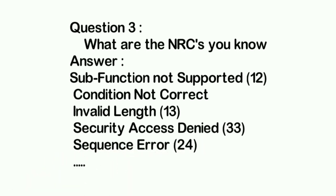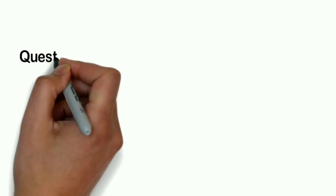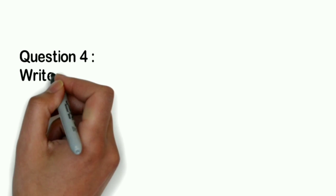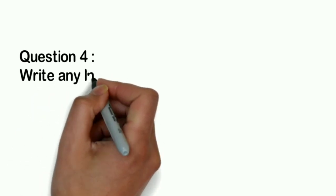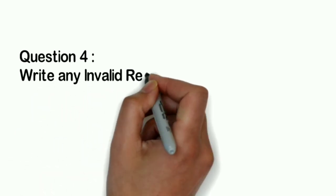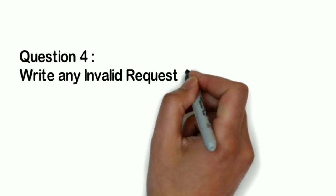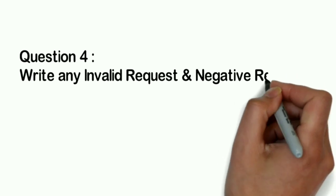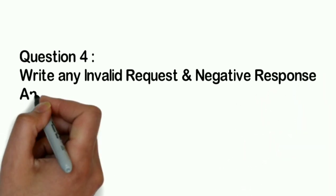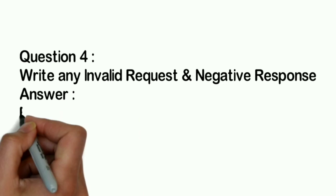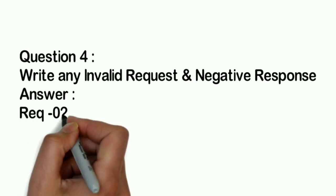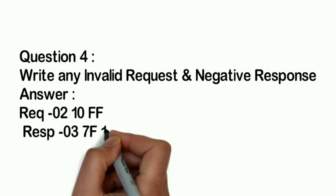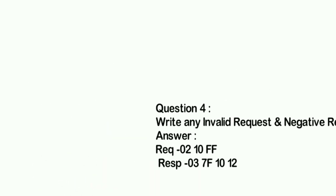Question four: Can you write any invalid scenario with the negative response? Here again, the continuity of the previous question's NRC. You can give a precise answer so you may not get more replication questions. I can give 0x10 0x0F - here 0x0F is considered as sub-function not supported.